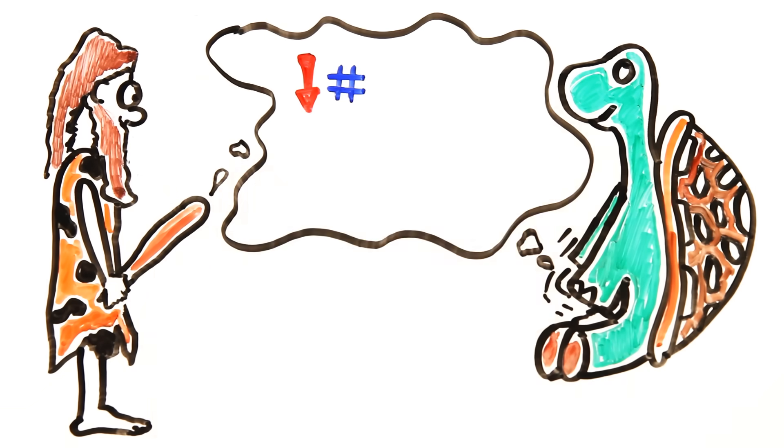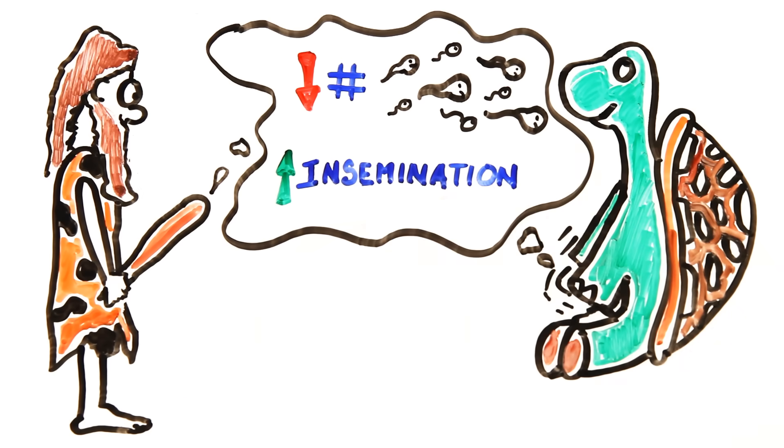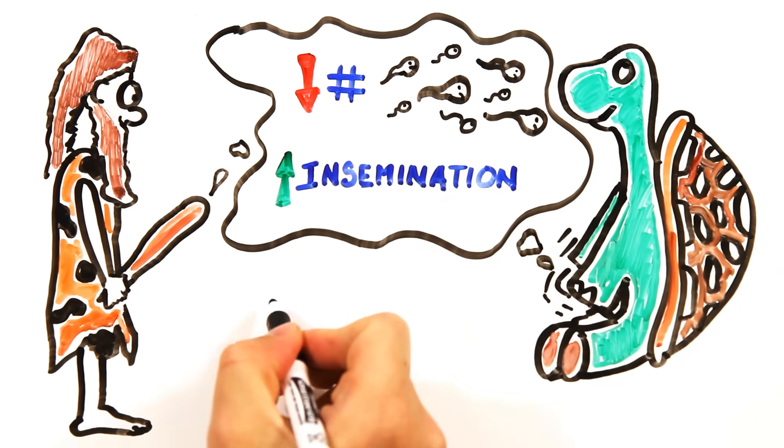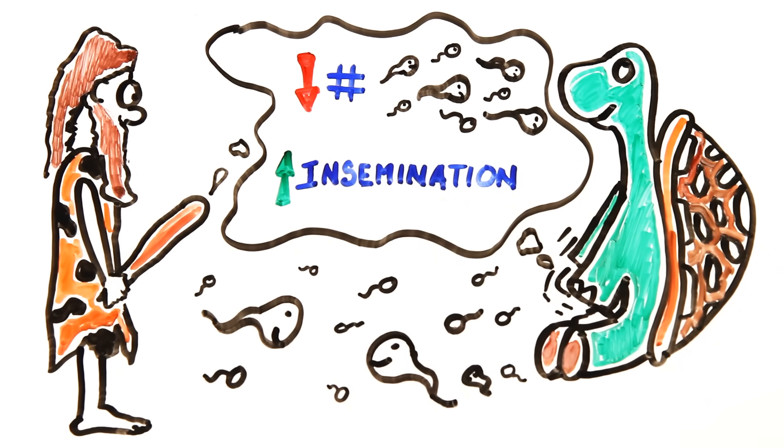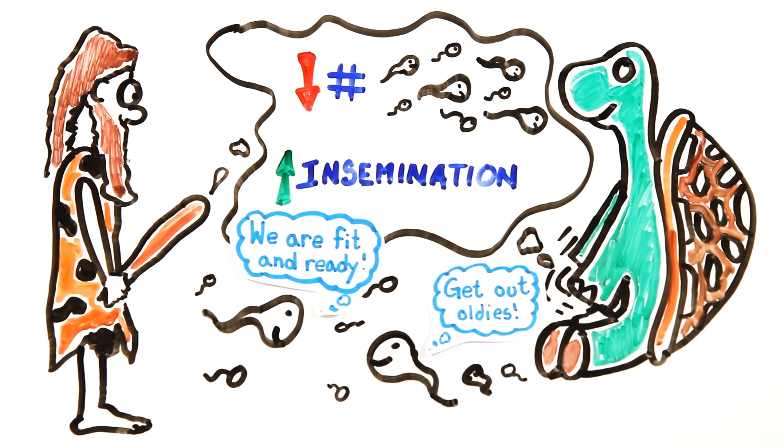A study showed that recent male masturbation reduced the number of sperm inseminated at the next copulation, but not the number retained by the female. From this, it was concluded that masturbation is a male strategy to improve the fitness of their sperm, as younger sperm have a higher likelihood of insemination.